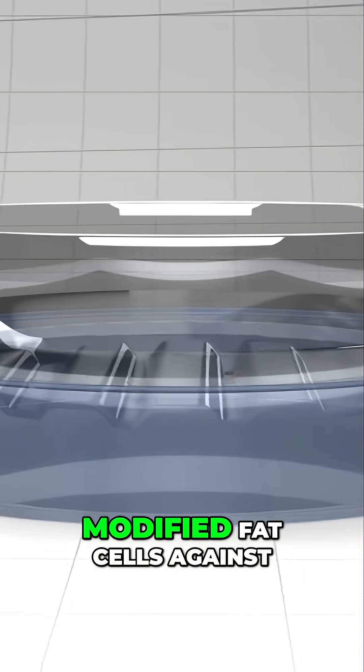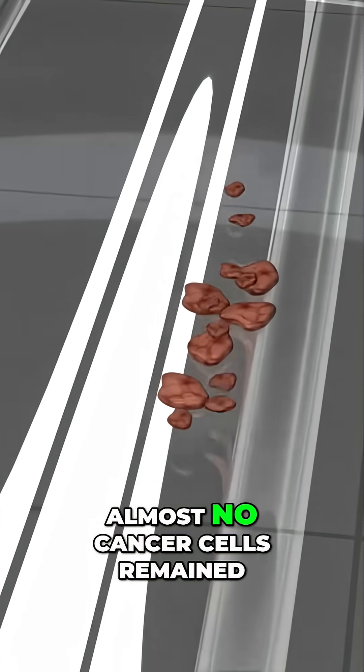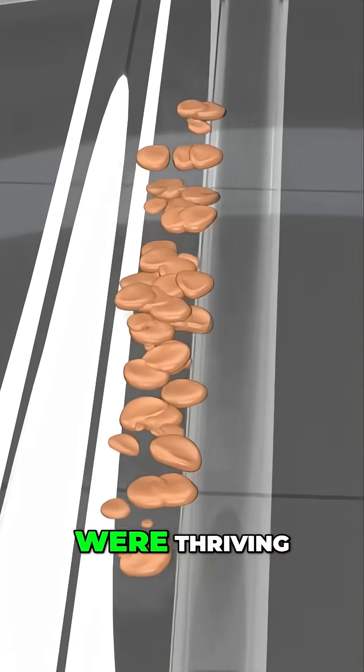When they tested UCP-1 modified fat cells against cancer cells, the results were shocking. At the end of the experiment, almost no cancer cells remained. Meanwhile, the beige fat cells were thriving.